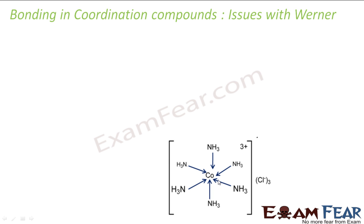The secondary valence is equal to the coordination number and this is fixed for a given metal. The coordination compound is characterized by its spatial arrangement and shape. Werner told that typically coordination compounds have shapes like octahedral, tetrahedral, and square planar. But actually, he could not explain a lot of things.